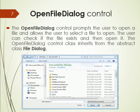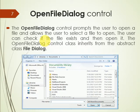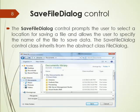The Open File Dialog control provides an open dialog box for the user, allowing them to open a file. It allows the user to select a file to open, and the user can check if the file exists before opening it. The Open File Dialog control class inherits from the abstract class FileDialog. You can see the open dialog box in the diagram.